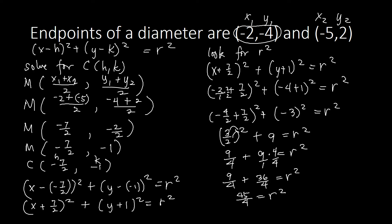Replacing r squared in our equation, the final standard equation of the circle is: x plus 7/2, squared, plus y plus 1, squared, equals 45/4. That is how you write the standard equation of the circle given the endpoints of a diameter.